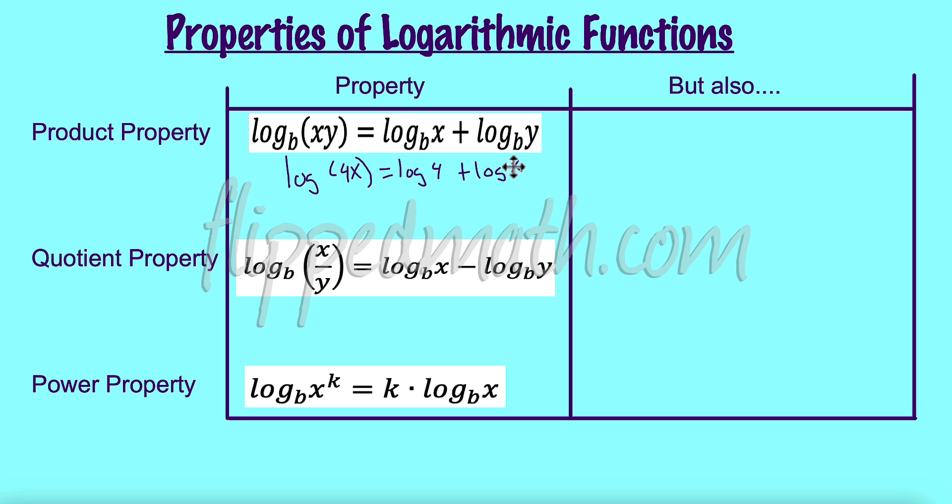So that would be expanding it. We're making it somewhat bigger. We could also go the other way. Perhaps we have this. We have a natural log of six plus the natural log of Y. We could condense these. We have the same base, natural log, and then we would say the natural log of the product of these two things, six Y, because we're multiplying those together.